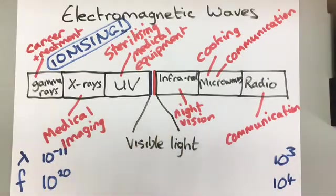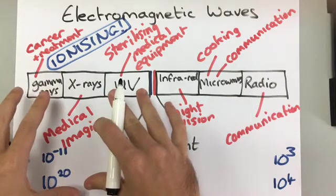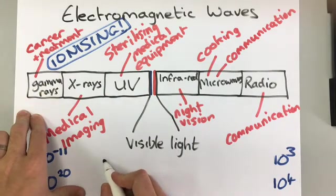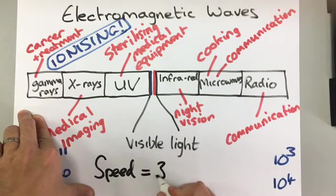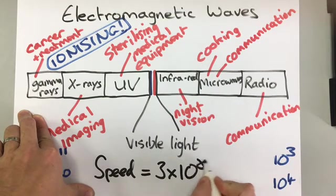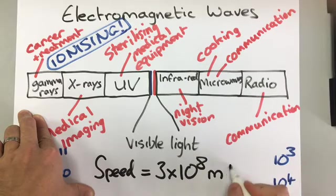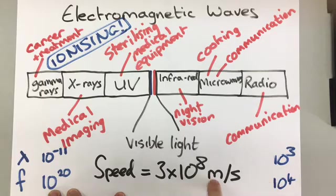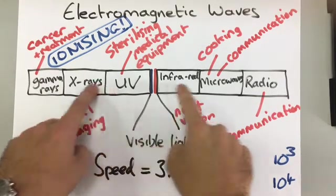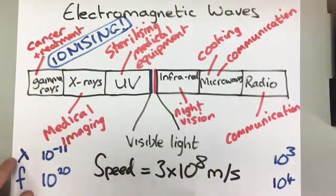Now, the other thing that you need to remember about electromagnetic waves is that they all travel at the same speed in a vacuum. So, the speed that they travel in a vacuum is approximately 3 times 10 to the 8 metres per second. So, that's 3 with 8 zeros after it, metres per second. And all of these waves travel at exactly the same speed.